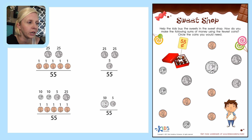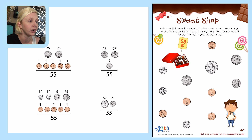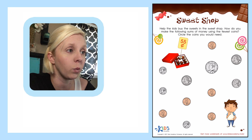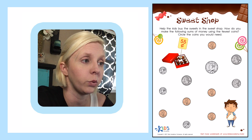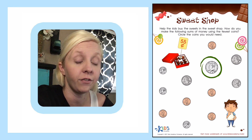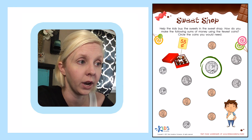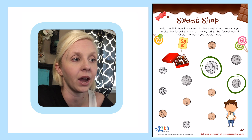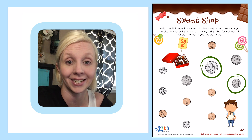Let's take a quick look — is there any other way we could put these together that would be less than two coins? And by looking at it, I don't think there is. So I think this right here is our answer. It says circle the coins you would need, so I'm going to put a circle around my 50-cent piece, or half dollar, and then my nickel. And that equals 55 cents.